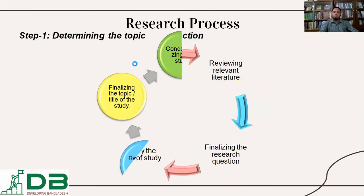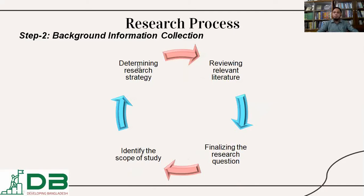The second major action in conducting formal research is background information collection. This involves reviewing relevant literature, finalizing the research question, identifying the scope of study, and determining research strategy. These four actions need to be completed in this part.